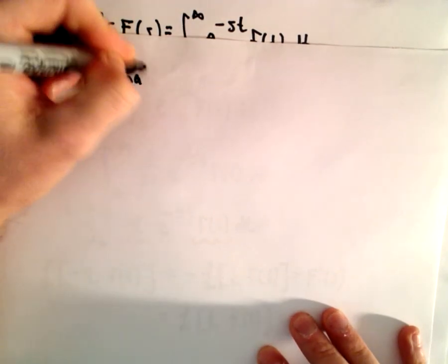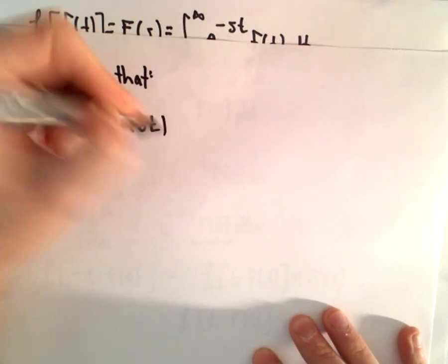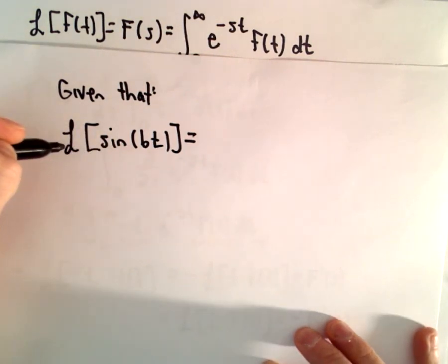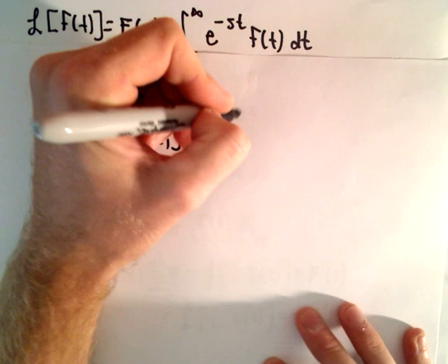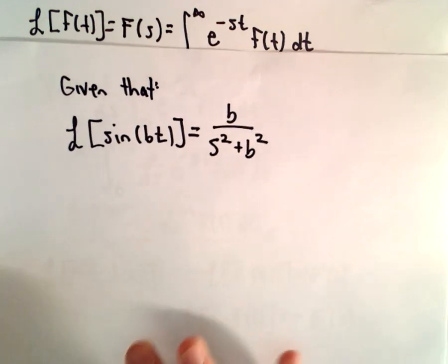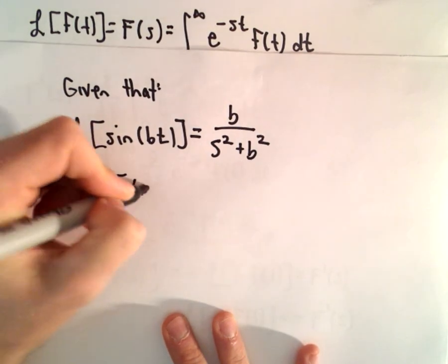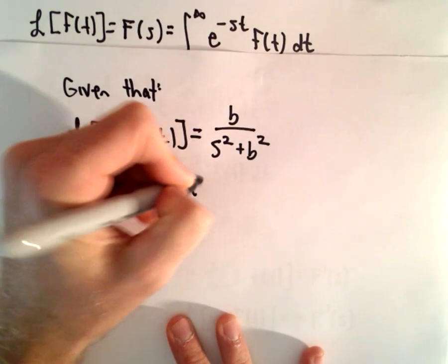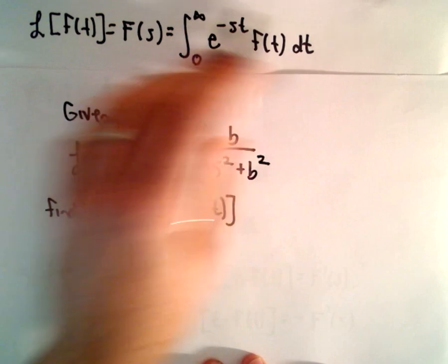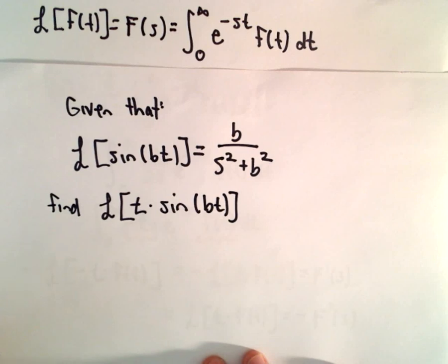Given that the Laplace transform of sine of b times t — and you can justify this using the definition, though I'm not going to show that here — the Laplace transform of sine of bt equals b over s squared plus b squared. What we're going to do is find the Laplace transform of t times sine of bt. This is useful because now to find a new Laplace transform, you don't have to go through all the integration — once you know one, it's easy to find another.